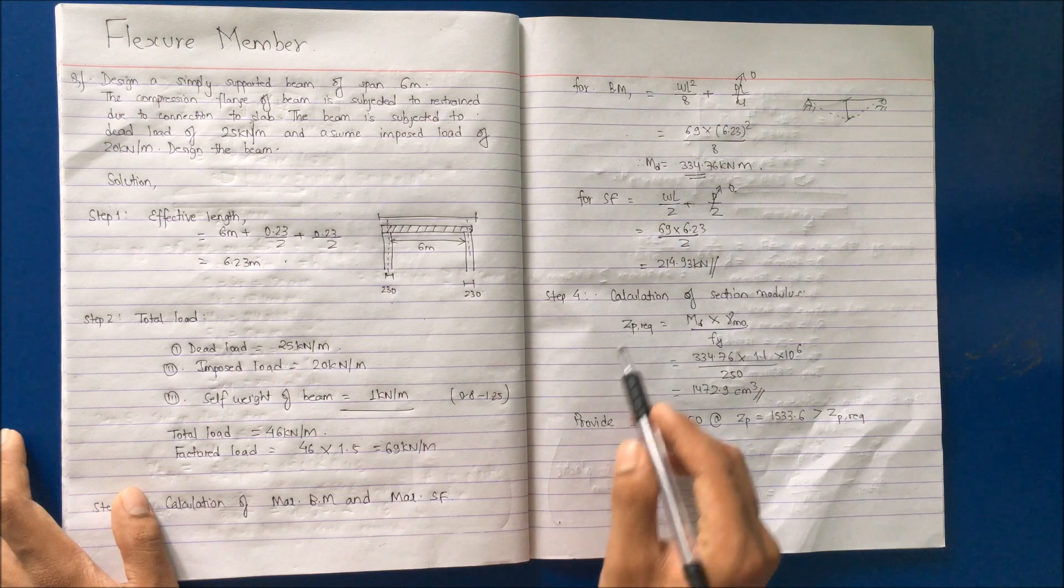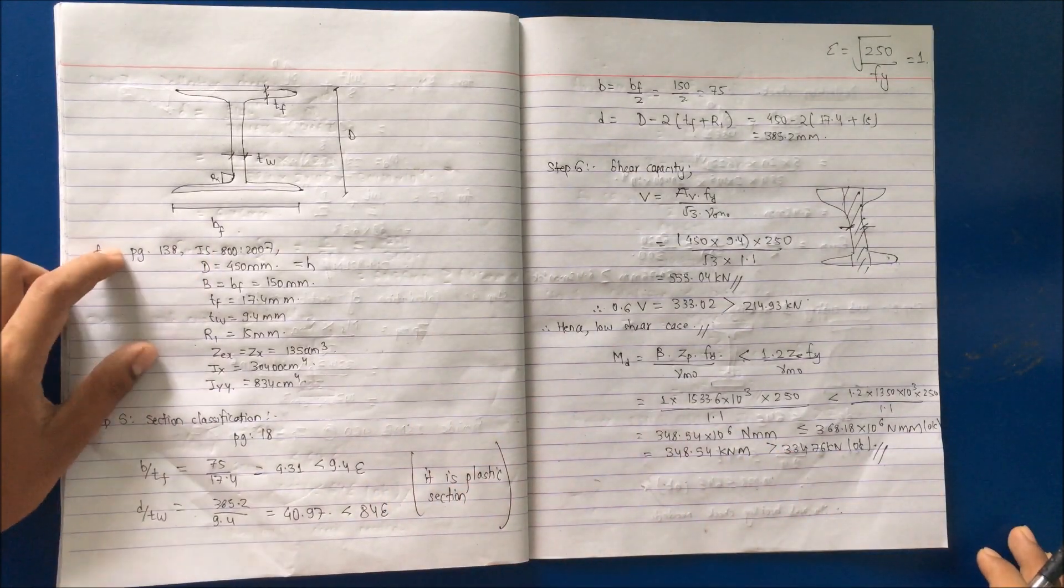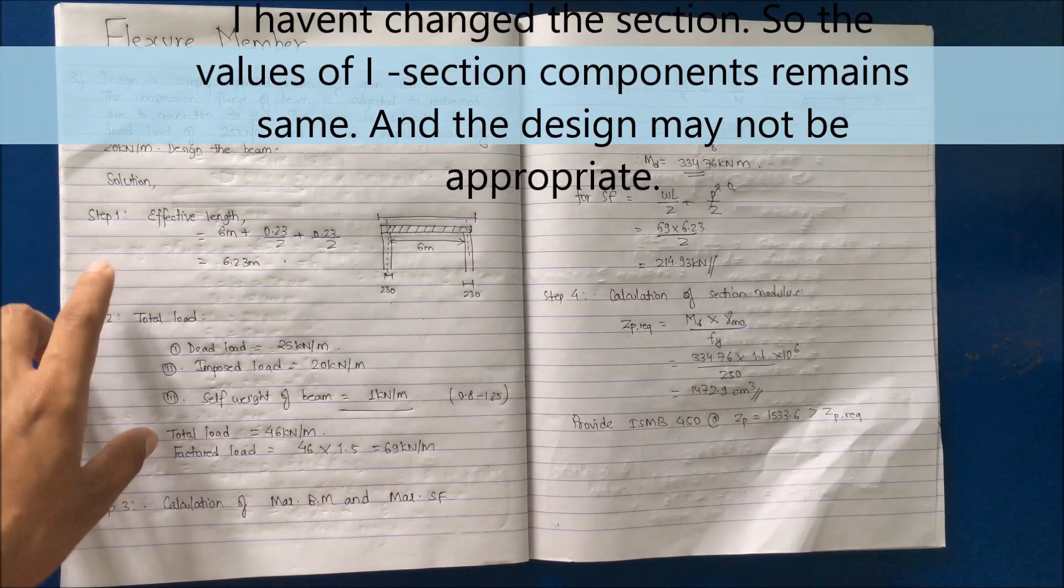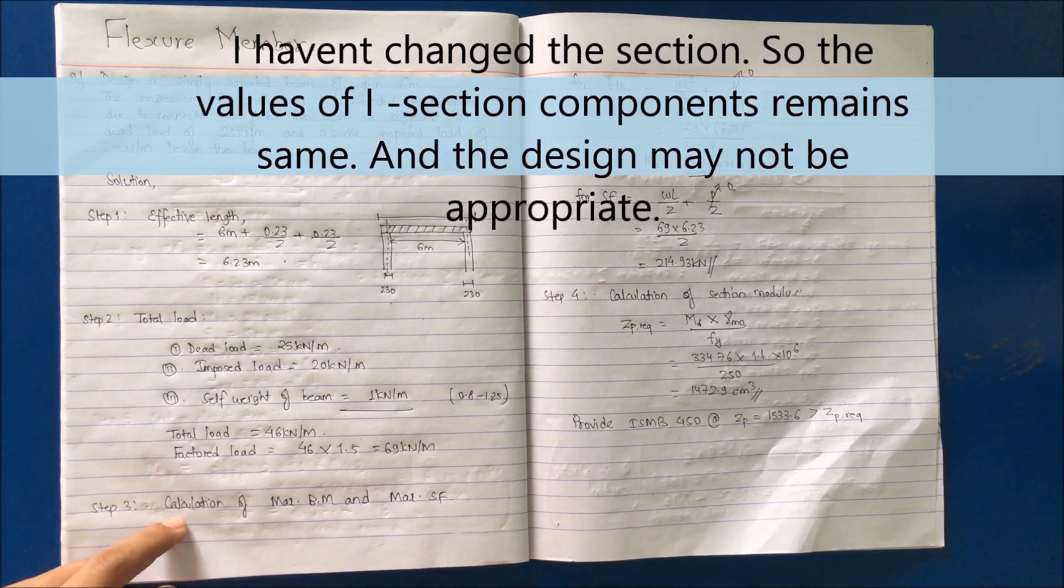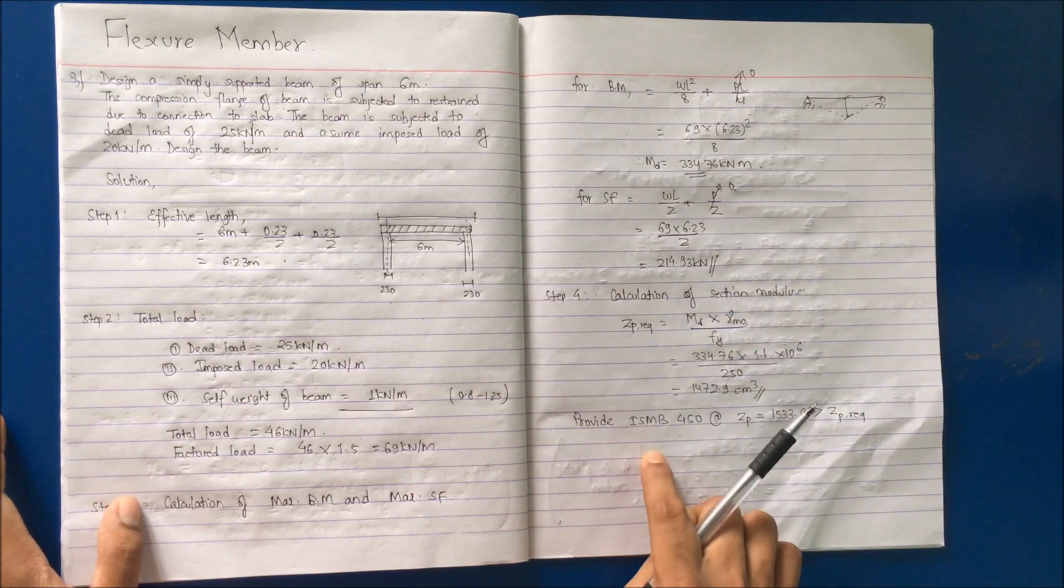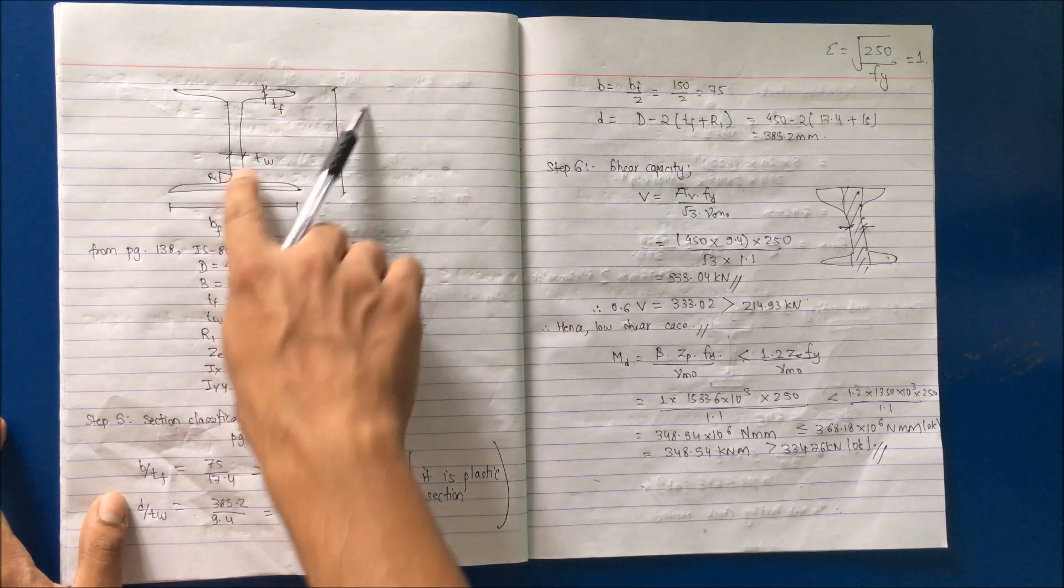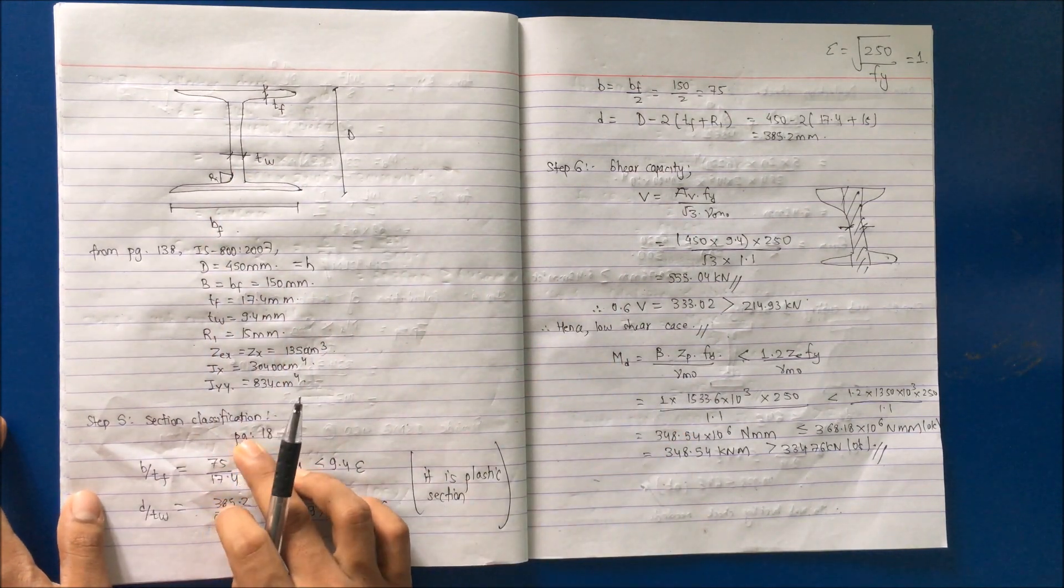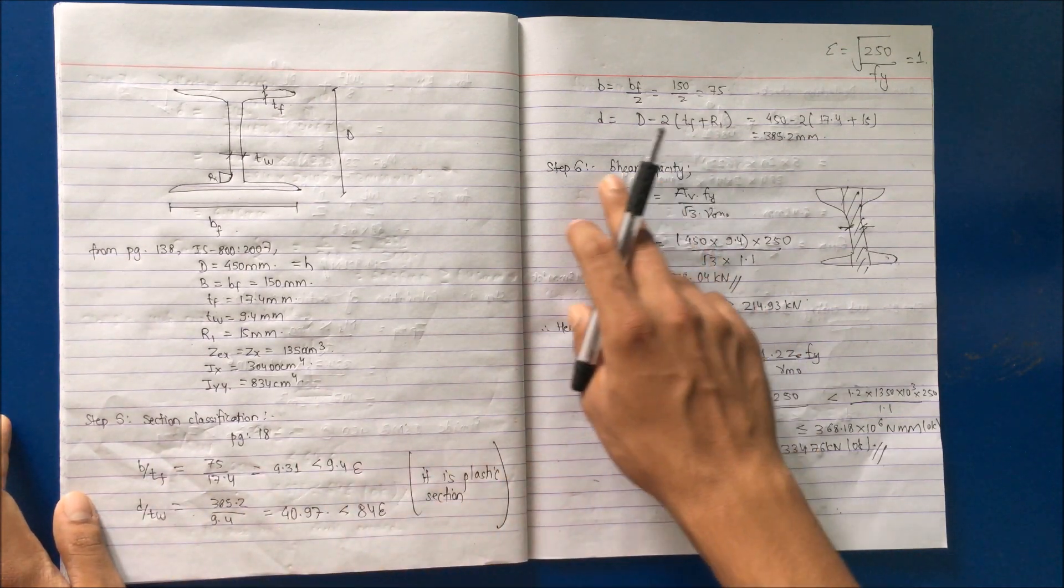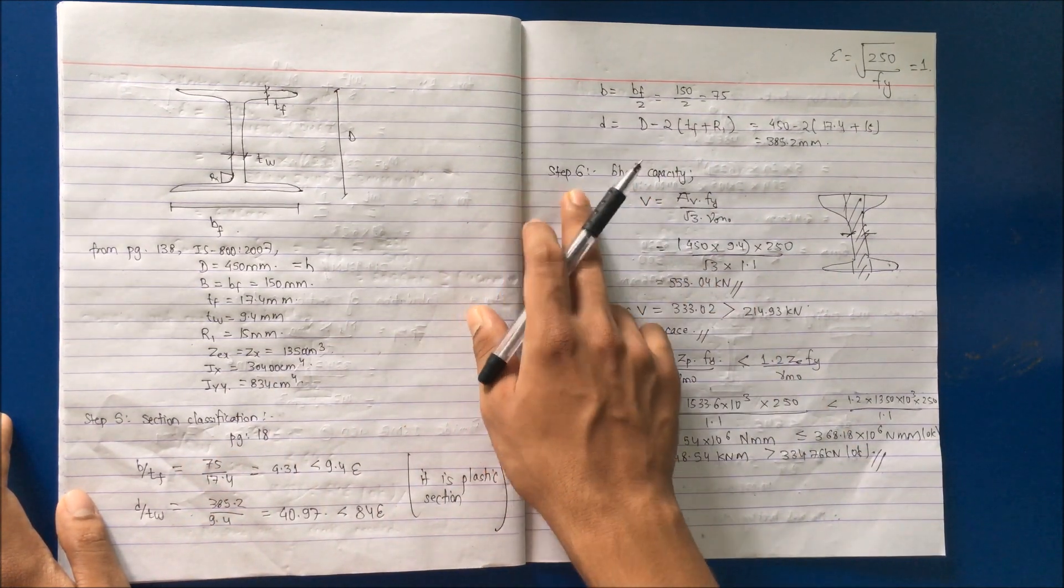With the increase of shear force, with this section modulus, we will find section classification and shear capacity. You will follow the same steps: effective length, total load, calculation of maximum bending moment and shear force, calculation of section modulus, selection of the section. Data of that section, section classification based on outstand flange width and depth of web will be the same. Up to step 5 it will be the same.